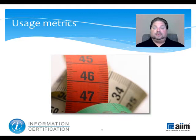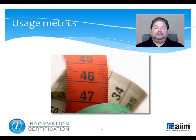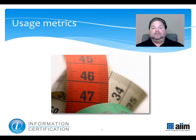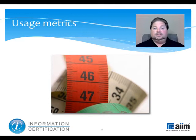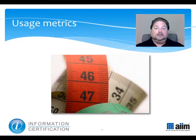Other metrics worth capturing include the number of information assets in use in each of the categories you identified at the outset, the number of information types you're dealing with, how often they're accessed, and how many times the same people or systems access them, the number of people or systems that touch it overall, the time it takes for a document to move from point A to point B, and how long and where it may sit while waiting for attention.